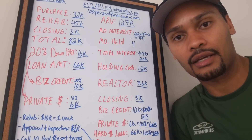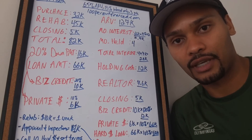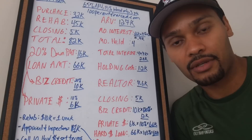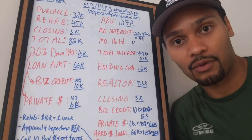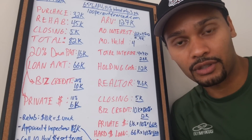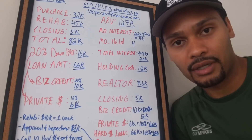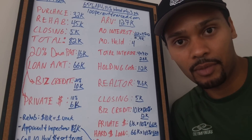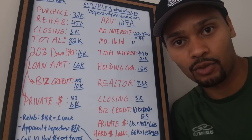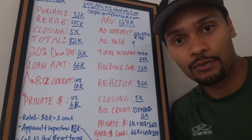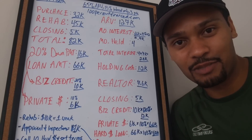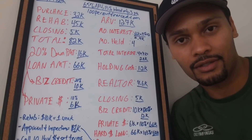People ask about hard money — where do you get it, what are the qualifications? Hard money lenders are private, localized lenders — people who have their own money or a pool of investors' money and they'll lend it to you for real estate investment. People ask why use hard money instead of going to a bank. Well, most banks won't lend money on a property that's not habitable.